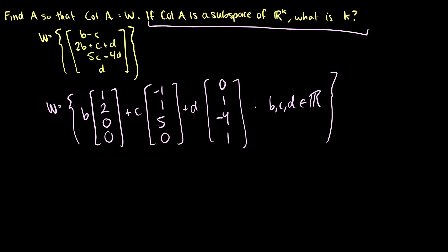So now we have our linear combination here. So we can take the vectors we have, and we can put them into the matrix A. So we can say that A consists of three vectors here. So it's going to be 1, 2, 0, 0, negative 1, 1, 5, 0, and 0, 1, negative 4, 1.